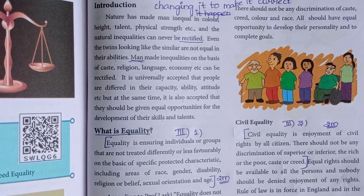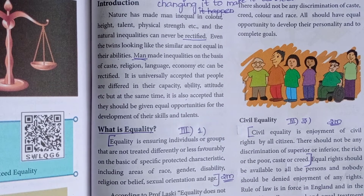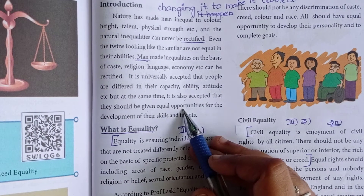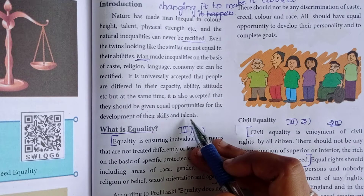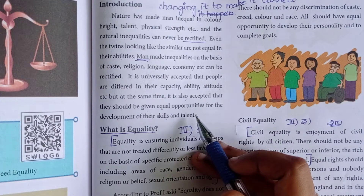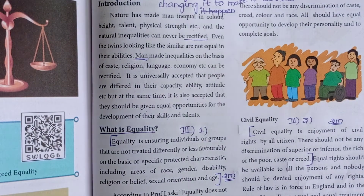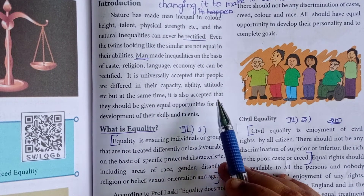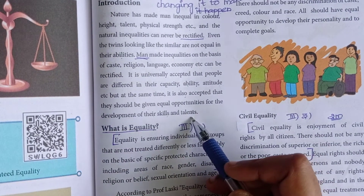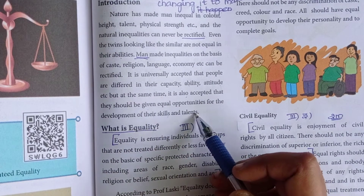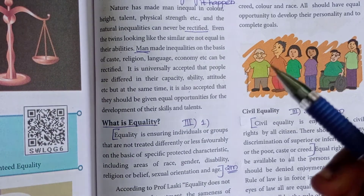For example, when you excel in dance but your friend doesn't know how to dance, you should give them an equal opportunity. Ask them to come and dance with you, so that your friend also learns dancing. Opportunities should be given to everybody equally, so that equal opportunities are available to everyone in society for the development of their skills and talents.